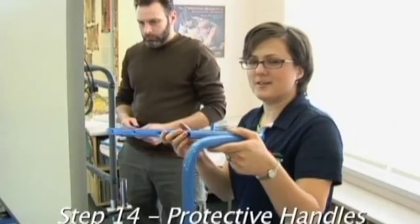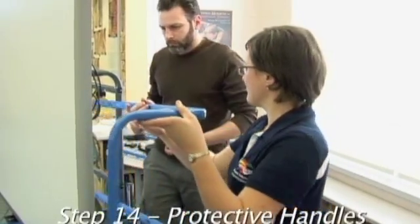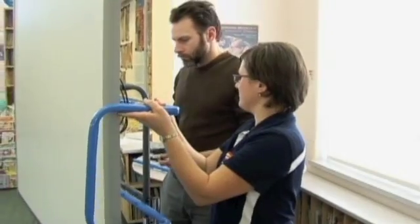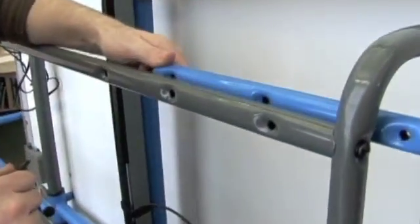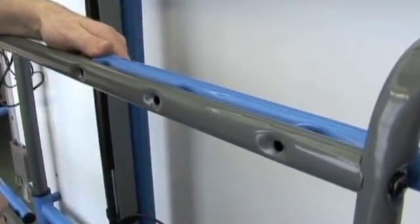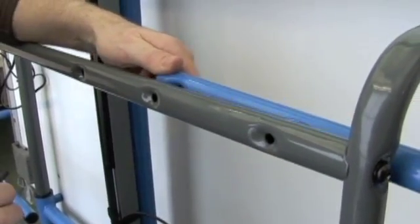Next step is installing the protective handles. Use the appropriate holes for the protective handles according to the size of your smart board and take into consideration if you are installing speakers. The handles should fit comfortably around your board and speakers if applicable.